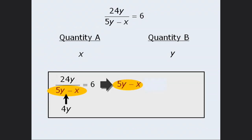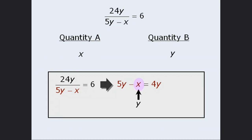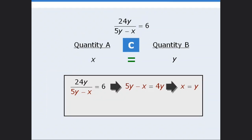So we can take the denominator and set it equal to 4Y. At this point, notice that we have 5Y minus something equals 4Y. Well, if 5Y minus something equals 4Y, then that something must equal Y. In other words, X here must equal Y. Now that we've shown that X equals Y, we can see that quantity A and quantity B must be equal, which means the correct answer here is C.